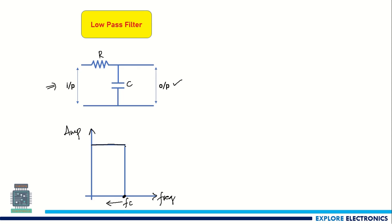Once the frequency reaches Fc, the cutoff frequency, any signal coming at the input that is greater than Fc will not be passed from the low-pass filter — high-frequency signals from this point will be rejected. The output of this low-pass filter is dependent on the reactance of the capacitor divided by the sum of reactance and resistance, multiplied by the input.